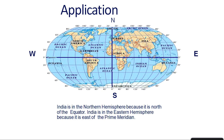India is in the northern hemisphere because it is north of the equator, and India is in the eastern hemisphere because it is east of the prime meridian. So to be specific, the actual location of India is in the north-eastern hemisphere. This question is obviously asked in MCQ — the accurate answer is eastern and northern hemisphere. So north-eastern hemisphere is the correct answer we must understand.